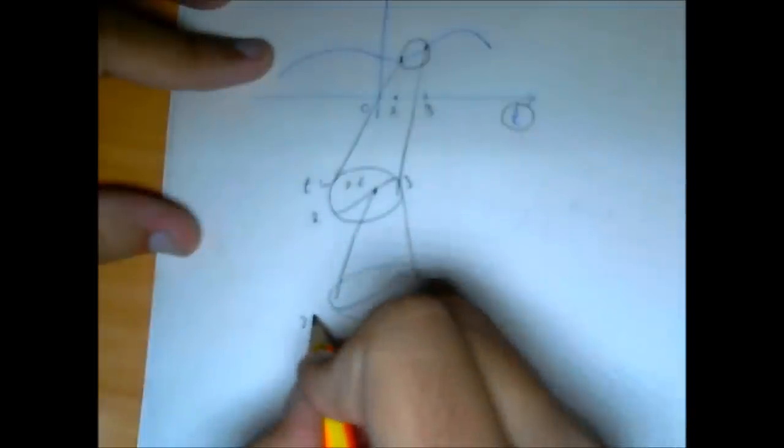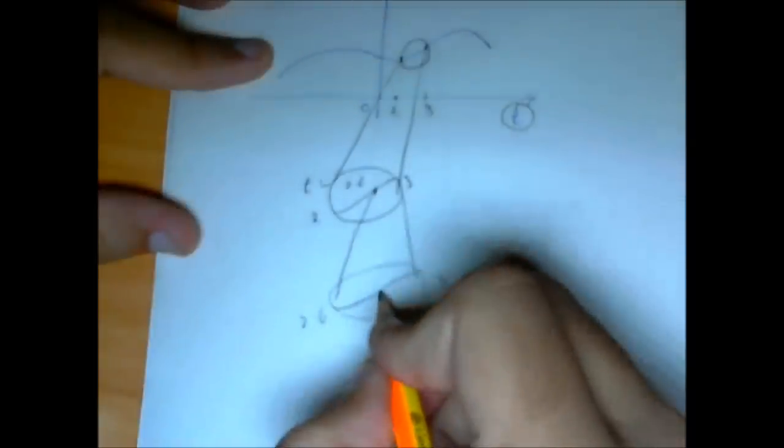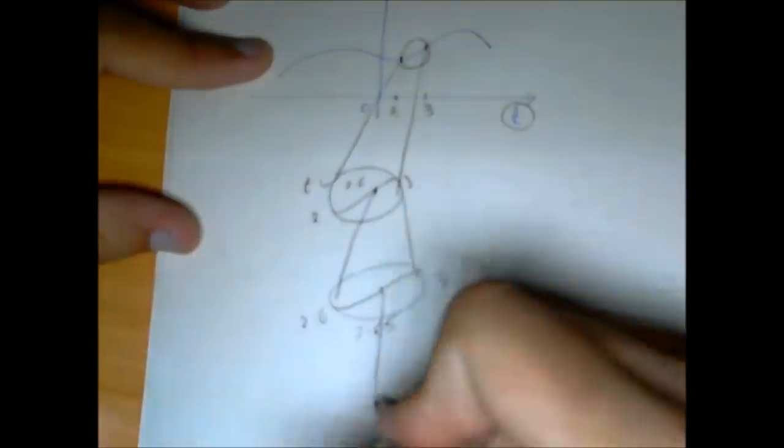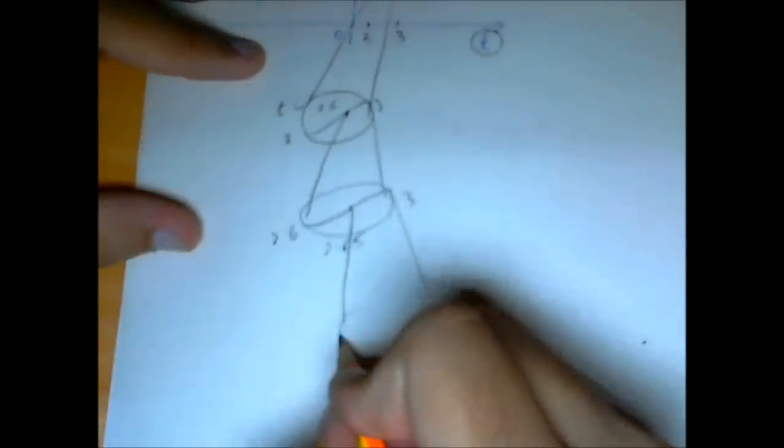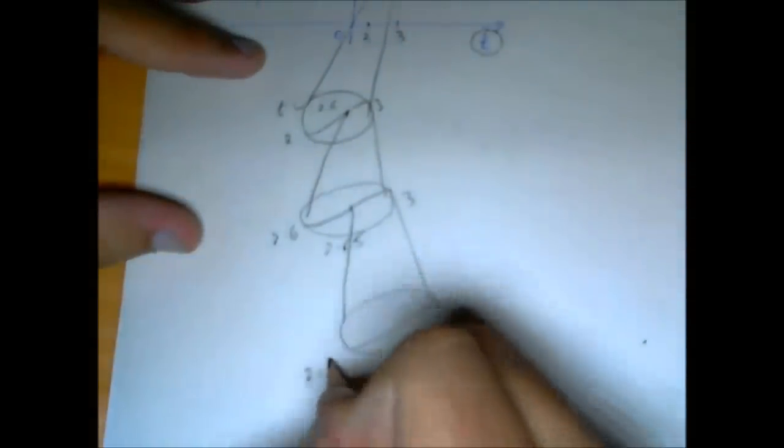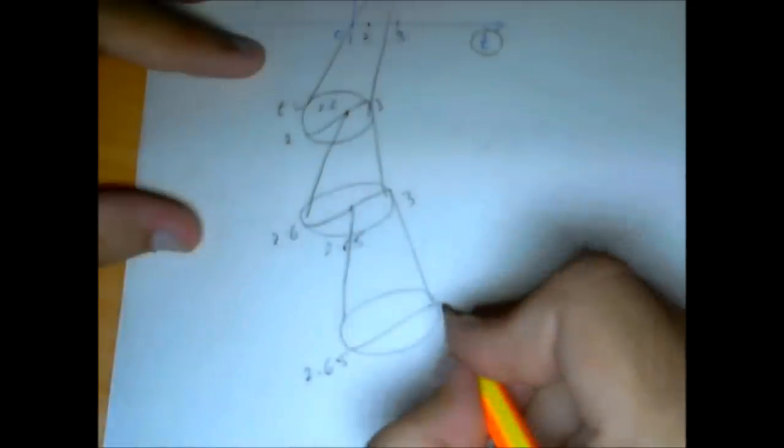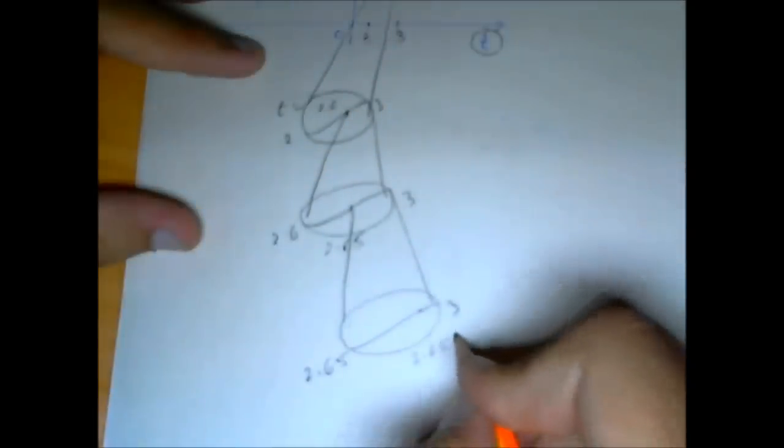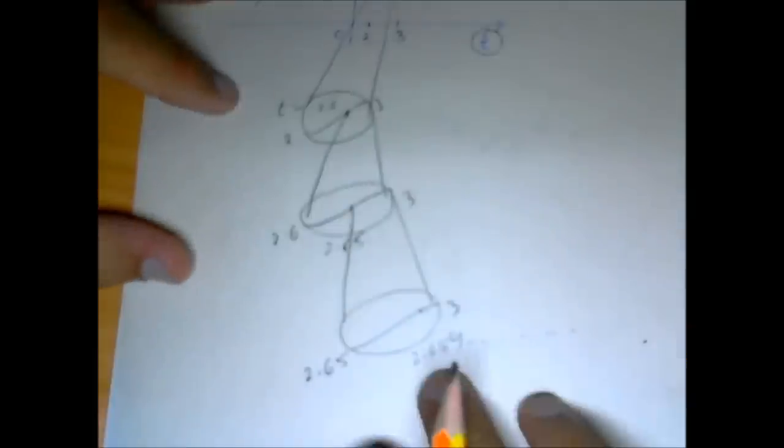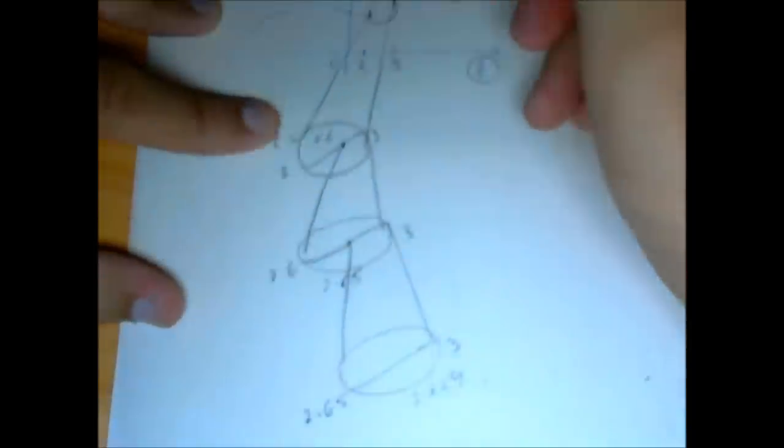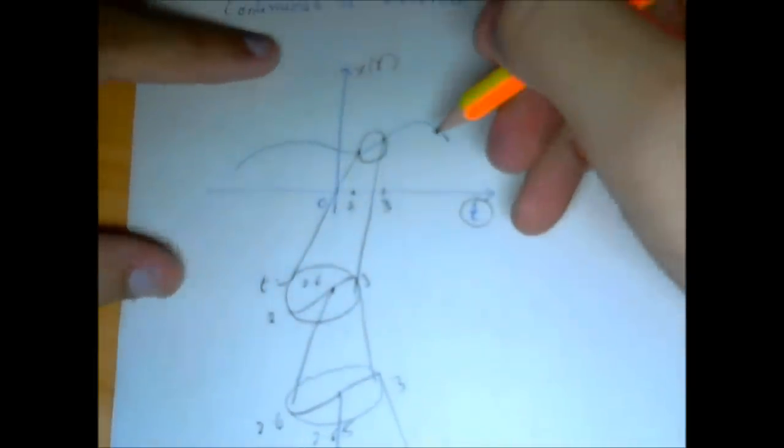So this is 2.6, this is 3. I can get the value at let's say 2.65 and I can magnify even more. I can get let's say 2.659 and I can go on and on. There is no limit.